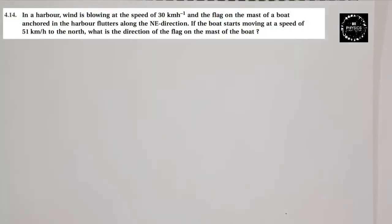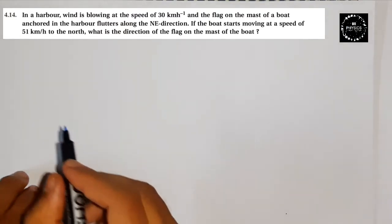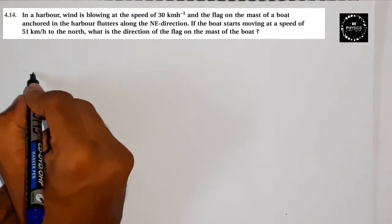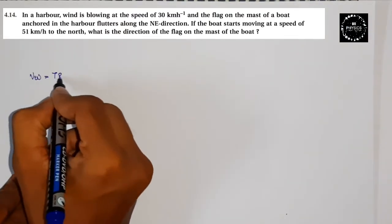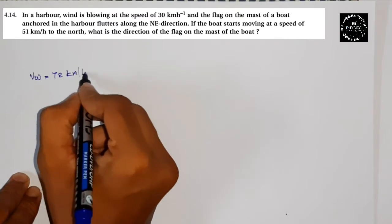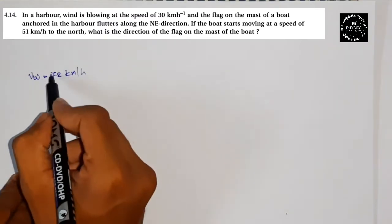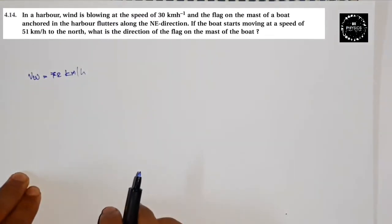Hello, this is example 4.14, one of the important examples. Let's look at the question. In a harbor, wind is blowing at the speed of 72 kilometers per hour. So if this is the speed of the wind, we can say that V_w which is 72 kilometers per hour.